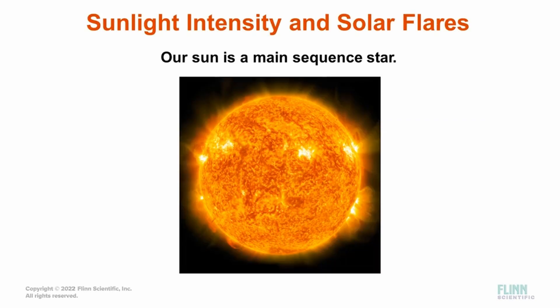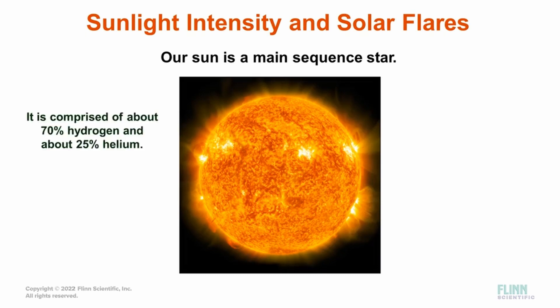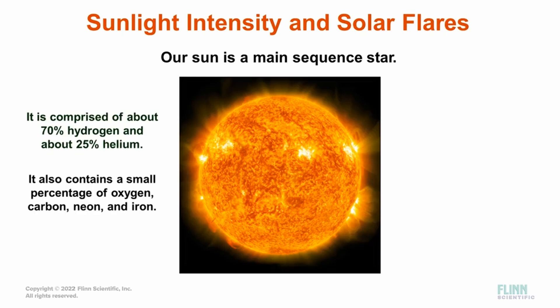Our sun is a main sequence star and the energy it produces is how life on Earth is able to flourish. The sun is primarily composed of hydrogen and helium. Hydrogen makes up about 70% of its composition and helium about 25%. The remaining amount is a mix of oxygen, carbon, neon, and iron. The sun is essentially a giant nuclear fusion reactor.